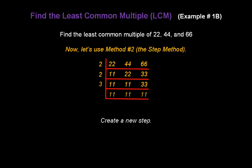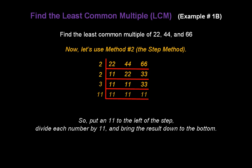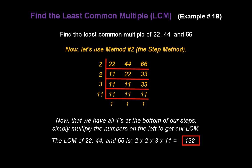Create a new step. There's only one number left, and it's a prime number. So, put an 11 to the left of the step. Divide each number by 11 — 11 divided by 11 gives us 1. We're going to have a 1 in every result at the bottom. Now that we have all 1s at the bottom of our steps, we simply multiply the numbers on the left to get our least common multiple. The least common multiple of 22, 44, and 66 is 2 times 2 times 3 times 11, or 132.